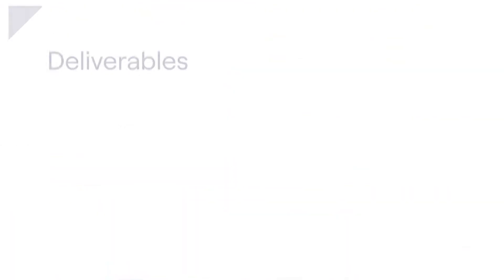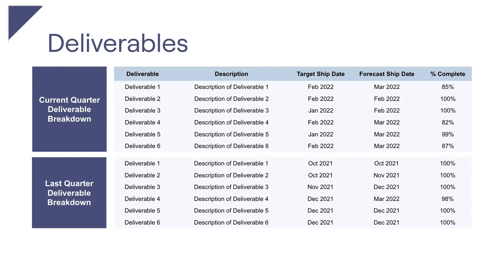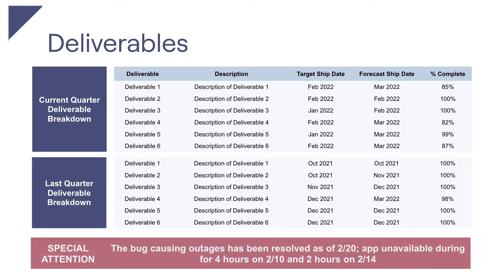The first slide focuses on deliverables. Business leaders have to plan around product delivery for sales and marketing timelines, and the board wants to know that this can happen. Focus on the deliverables that really tell your team's story and avoid topics that can confuse. You can also use this slide to draw attention to any delivery issues that are important enough that the board should be aware of.